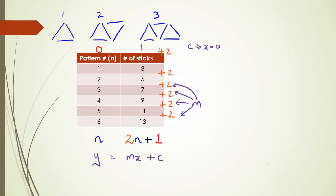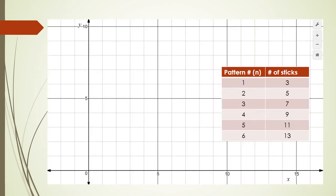Okay, so what happens when we actually put this in a graph? Let's have a look. Okay, so I've got a graph, I mean, a Cartesian plane here, and I've got the number of the pattern and the number of sticks.